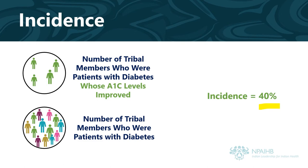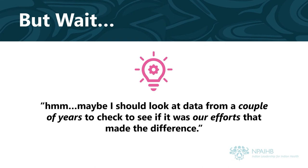That's amazing — it appears that your team's efforts likely contributed to this awesome success. After a moment though, you think: wait, maybe I should look at data from a couple of years to check and see if it was our efforts that made a difference. After all, you only did your campaign in 2021. So you ask the clinic for the incidence of tribal patients with diabetes whose A1C numbers improved in 2021, 2020, 2019, 2018, 2017, and 2016.